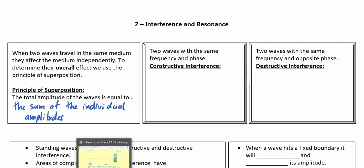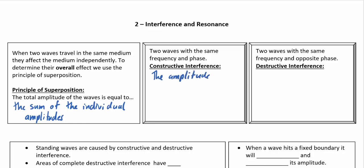So two waves with the same frequency and phase will undergo constructive interference where the amplitudes add up to make a larger wave. We compare that to destructive interference where the two amplitudes subtract to make a smaller wave.